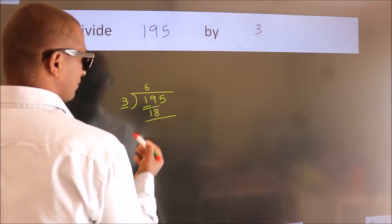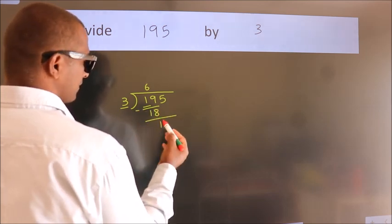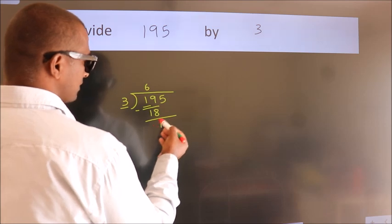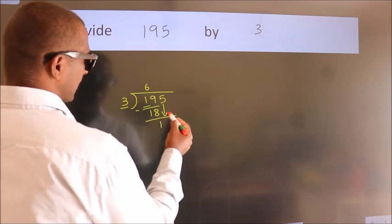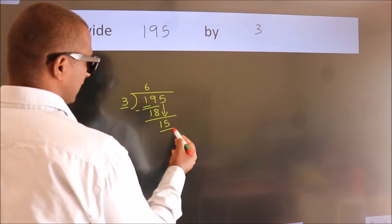Now we should subtract. We get 1. After this, bring down the beside number. So 5 down. So 15.